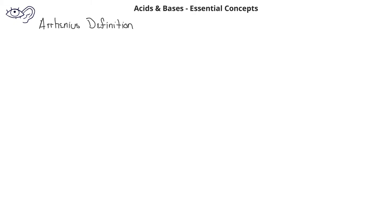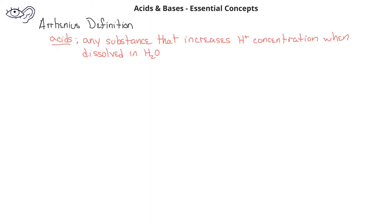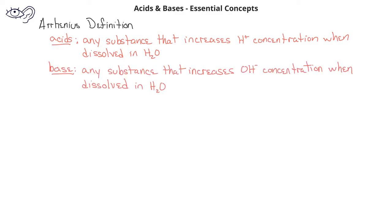To begin with, you should recall from previous classes the Arrhenius definition of acids and bases. Based on the Arrhenius definition, an acid was any substance when dissolved in water which increases the concentration of hydronium ions or hydrogen ions. On the other hand, a base is any substance when dissolved in water that increases the concentration of the hydroxide ion.